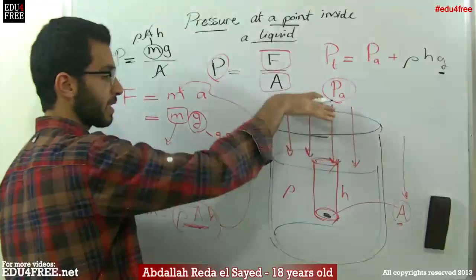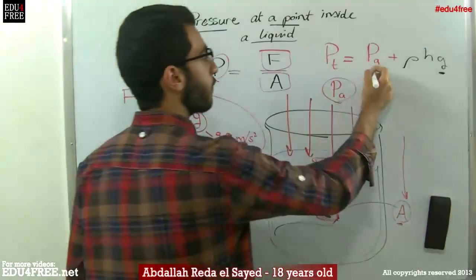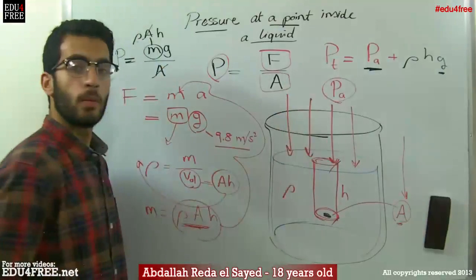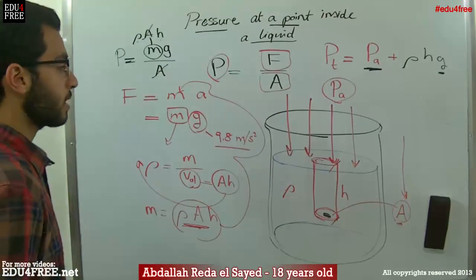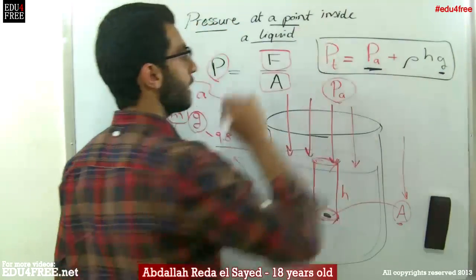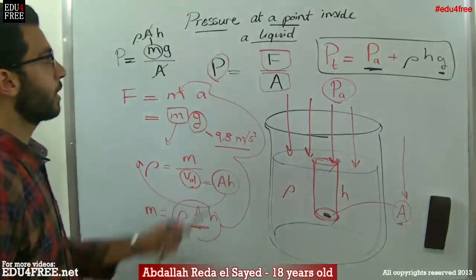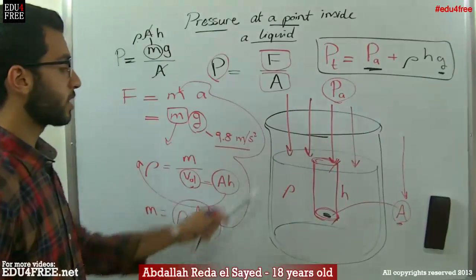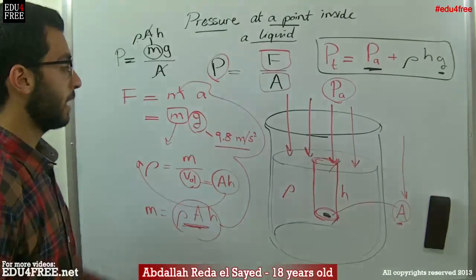And then we add, if the liquid is exposed to atmospheric air, then of course we need to add the atmospheric pressure to get the total pressure. And by this formula, we can calculate the pressure that the liquid exerts at a certain point inside the liquid in a container.